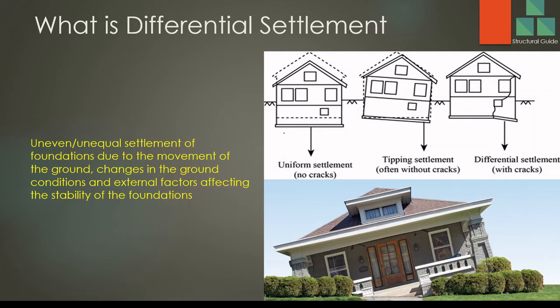As you can see here, if a structure settles uniformly, there won't be any additional stresses on structural elements due to even or uniform settlement. When the whole structure tilts, there is some impact. But when part of the structure has a different settlement than other parts — with relatively higher settlement in one area — that is called differential settlement.